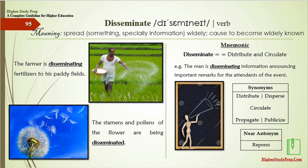Disseminate means to spread something, especially information, widely, or cause it to become widely known. Mnemonic: disseminate — distribute and circulate. Example: The man is disseminating information, announcing important remarks for the attendance of the event. The synonyms are distribute, disperse, circulate, propagate, or publicize, and the near antonym is repress. Further examples: The farmer is disseminating fertilizers to his fields; the stamens and pollens of the flower are being disseminated.